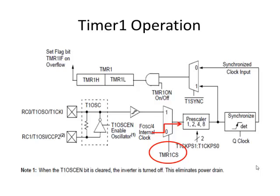When the clock select bit is 0, it takes FOS over 4 — the oscillator frequency, the system clock frequency divided by 4 — and that feeds into the timer. When this bit is 1, we're taking a signal from an external pin. Notice this pin has three names because it has three purposes: RC0 is bit 0 of port C, but if we're using it as our external clock source for the counter, we can't use it as a general purpose port bit — it becomes the T1 clock signal.